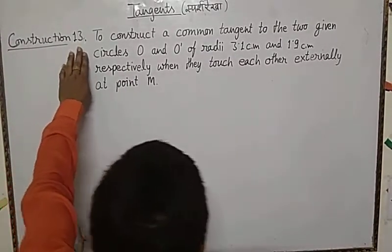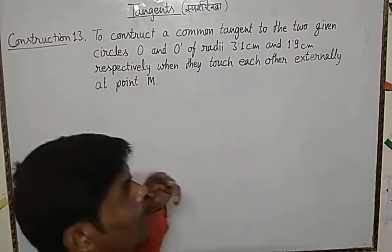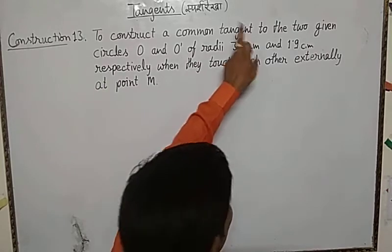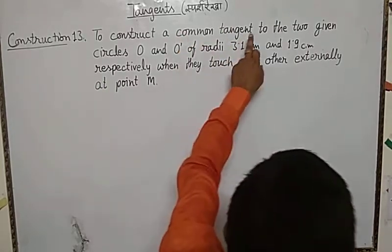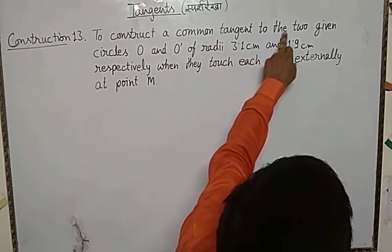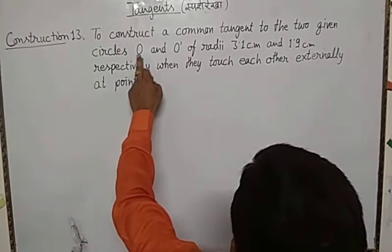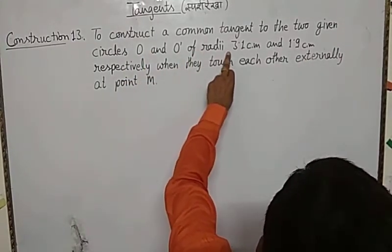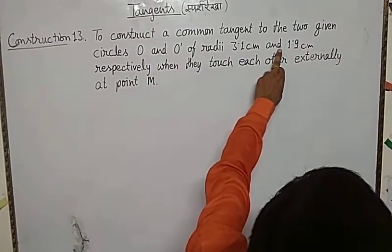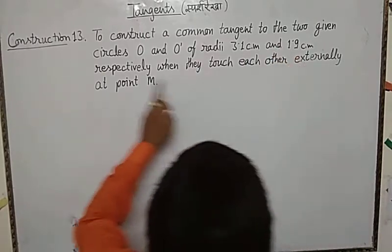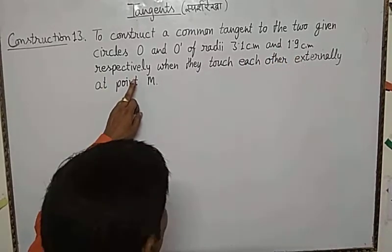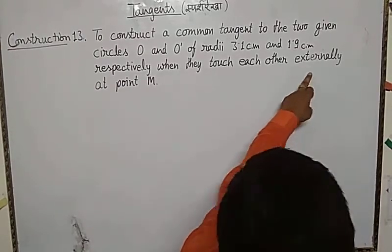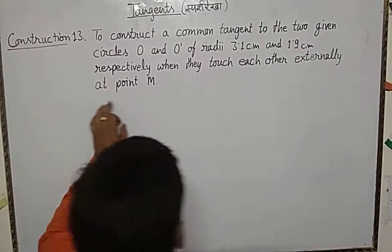Here is your construction number 13 — to construct a common tangent, it means direct common tangent, to the two given circles O and O' of radii 3.1 centimeter and 1.9 centimeter respectively, when they touch each other externally at point M.